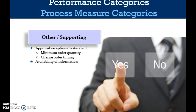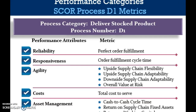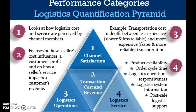Another metric classification scheme receiving increased attention is that developed by the Supply Chain Council and contained in the Supply Chain Operations Reference, or SCOR, model. The five major categories of metrics used to measure process performance are reliability, responsiveness, flexibility, cost, and assets. A perspective on transaction cost and revenue focuses on how a seller's cost influences a customer's profit and how a seller's service impacts a customer's revenue — if the cost of logistics service allows a customer to make more profit, the customer should be willing to buy more.